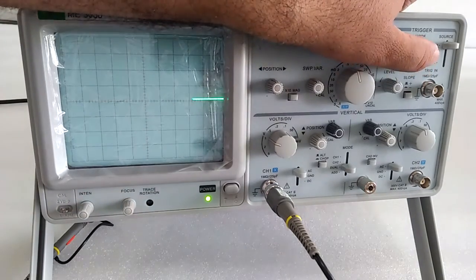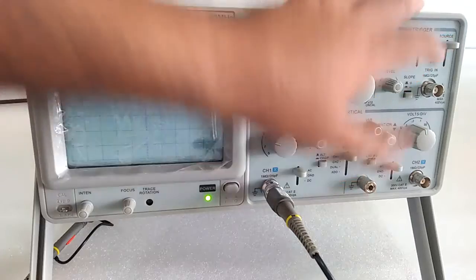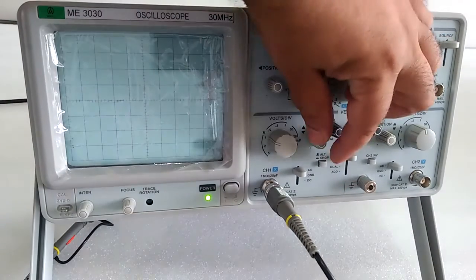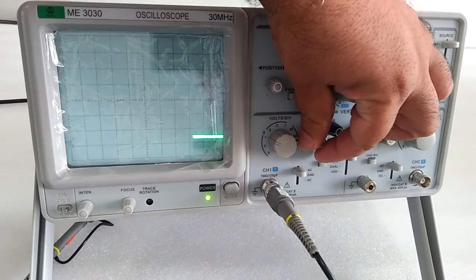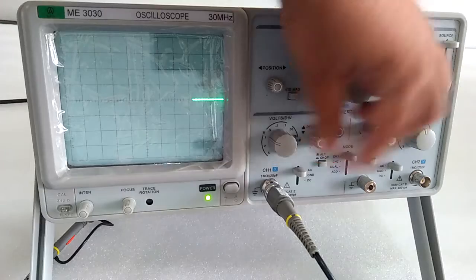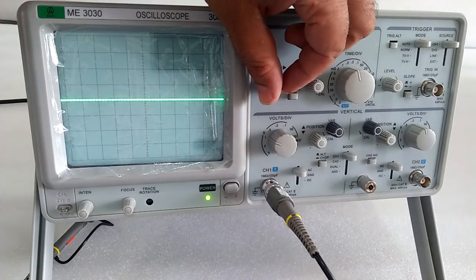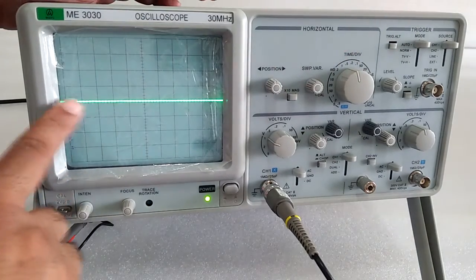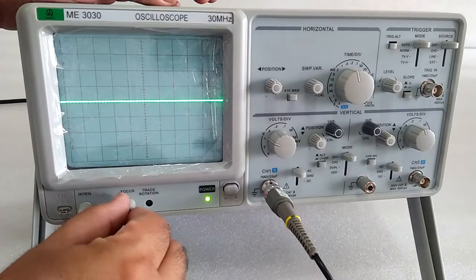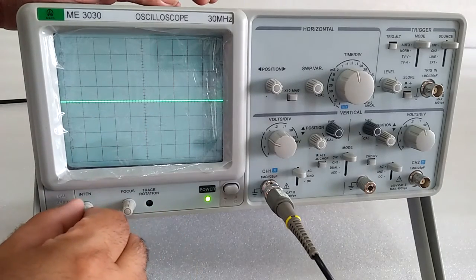Put the mode switch on auto and set it to channel 1. Using channel 1 up and down controls, you will get the baseline. Get the position complete. After getting the line, you have to set the focus and intensity as well.